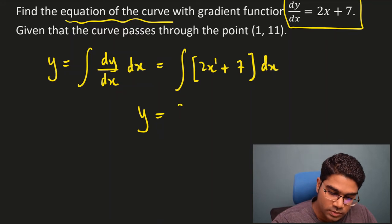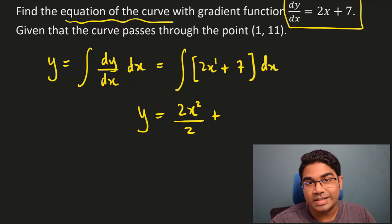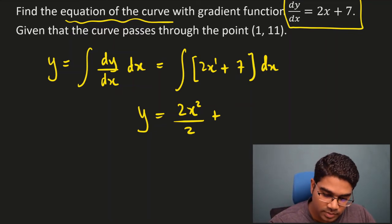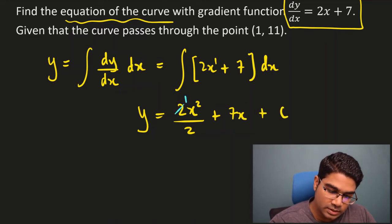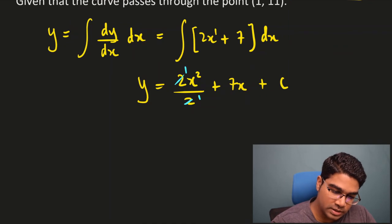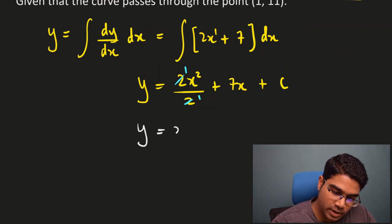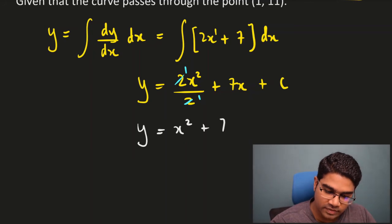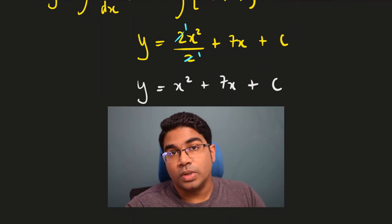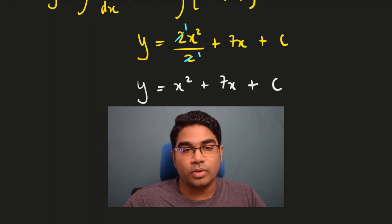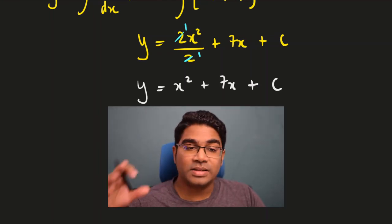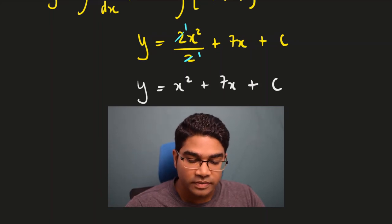Here we have x to the power of 1, so 1 plus 1 gives 2. This becomes 2x squared over 2 plus 7x — since 7 is just a number, integrating with respect to x gives 7x — plus the constant of integration c. Simplifying, we get y equals x squared plus 7x plus c. We almost have the equation, but we still have an unknown: c is an unknown here. We cannot leave the constant as an unknown — we need to find the value of this constant.